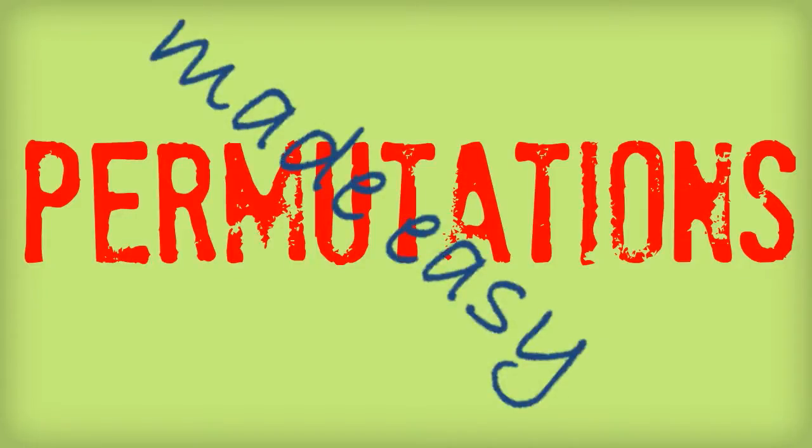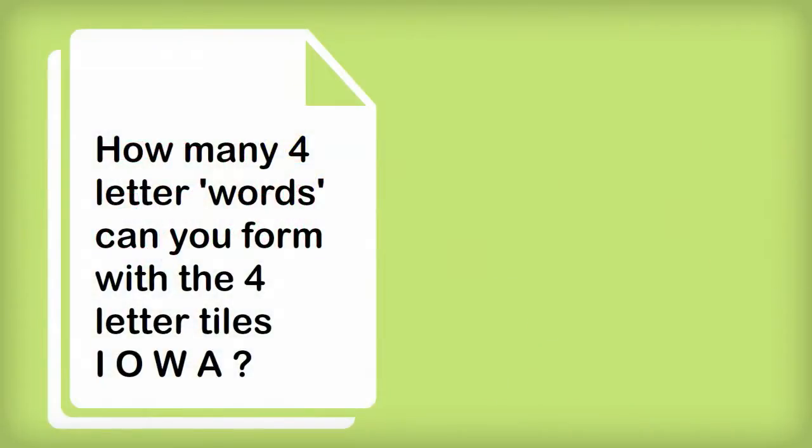Today, permutations made easy. I'm going to go through a few problems in permutations that will get harder as we go. So here's the first one. How many four letter words can you form with the four letter tiles I, O, W, A?